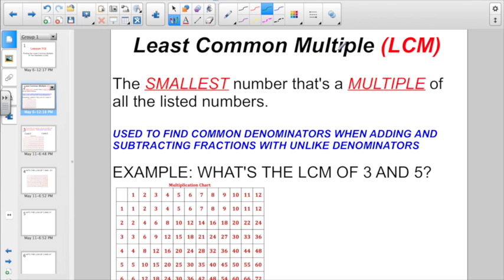The least common multiple, or the LCM, means the smallest number that's a multiple of all the listed numbers. We've been listing down multiples of numbers in our lessons for a while now. The reason why this is so important is it's used to find common denominators when adding and subtracting fractions with unlike denominators.